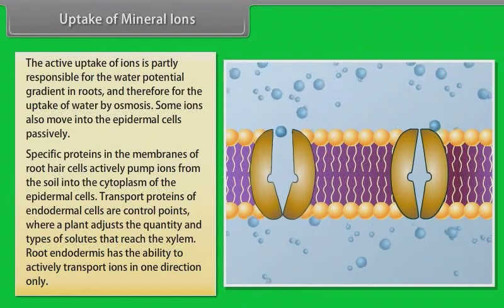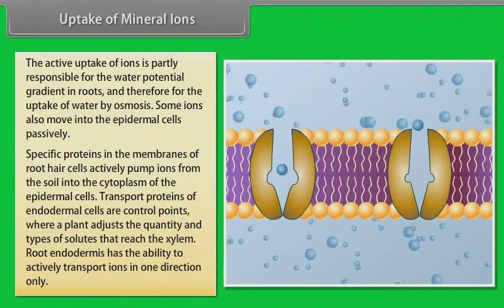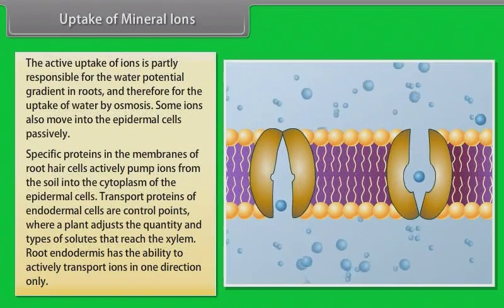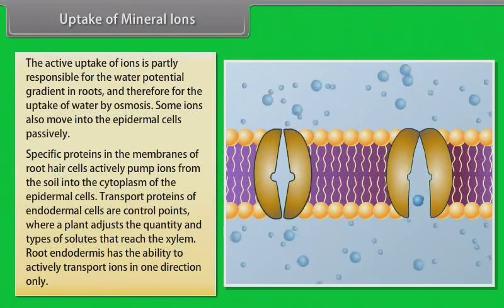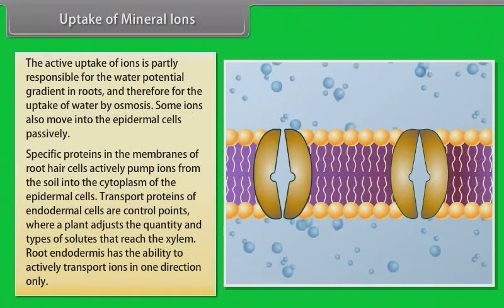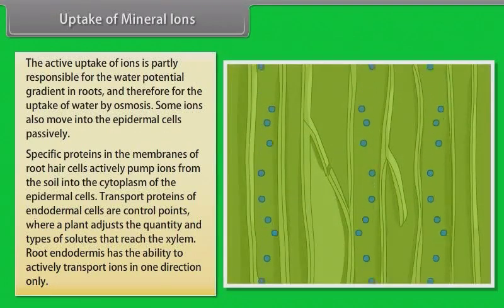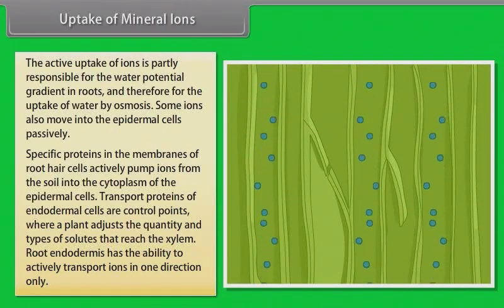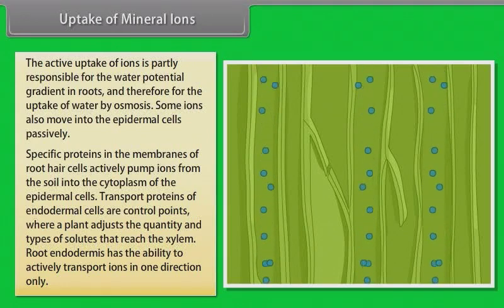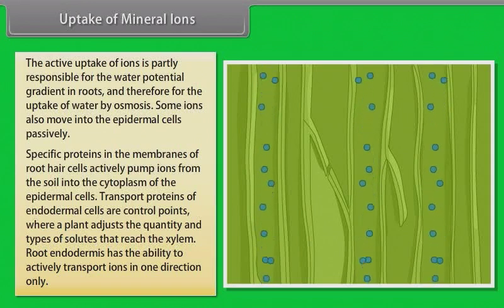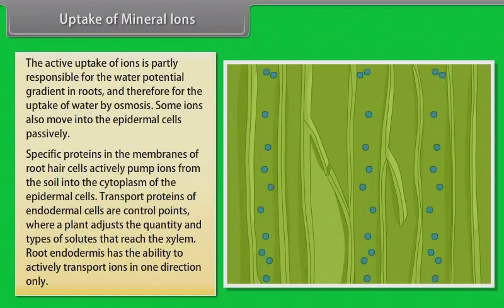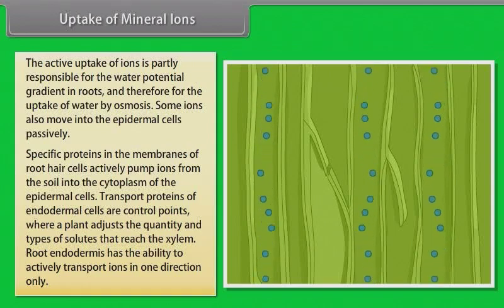Like all cells, the endodermal cells have many transport proteins embedded in their plasma membrane. They let some solutes cross the membrane but not others. Transport proteins of endodermal cells are control points where a plant adjusts the quantity and types of solutes that reach the xylem. Note that the root endodermis, because of the layer of suberin, has the ability to actively transport ions in one direction only.